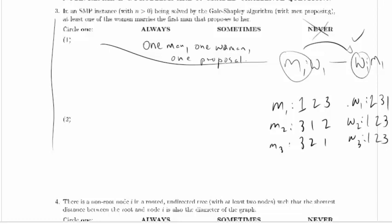So we'll have man 1 propose to woman 1 and she will accept because she's not engaged yet. Then man 2 will propose to woman 3, and then man 3 will propose to woman 3. Will she accept? No, she'll reject his proposal, and then he'll propose to woman 2 and we're done.